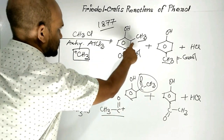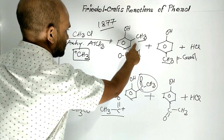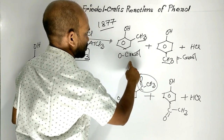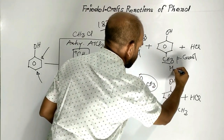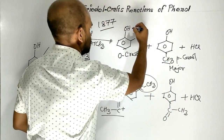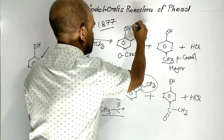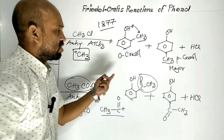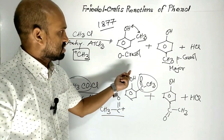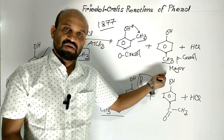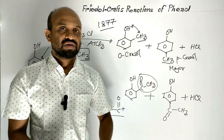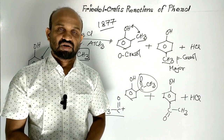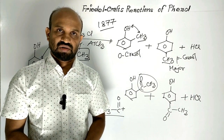In Friedel-Crafts alkylation of phenol, ortho-cresol and para-cresol are formed. The major product is para-cresol, because steric effect is functional at the ortho position — ortho-cresol cannot be formed in large quantities. Para-cresol is formed in large quantities because steric hindrance is less at the para position. So in Friedel-Crafts alkylation of phenol, para-cresol is the major product.